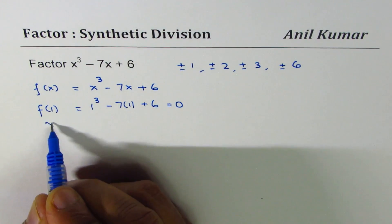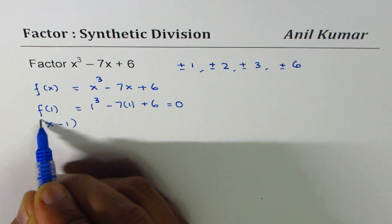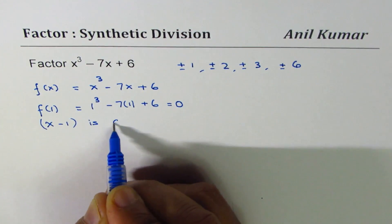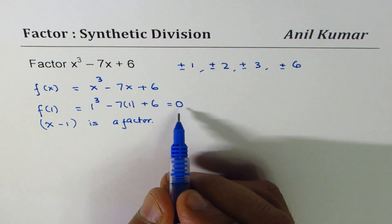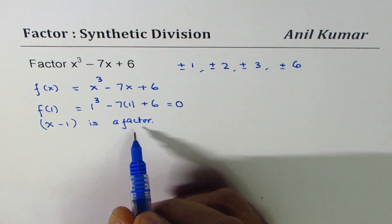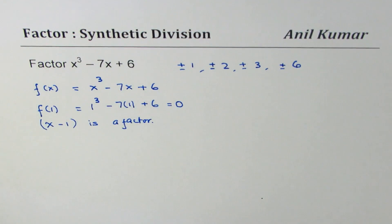That means that (x - 1) is a factor. So if the remainder is 0, then we do have a factor that we get from the factor theorem. Now how do we get the other factors?